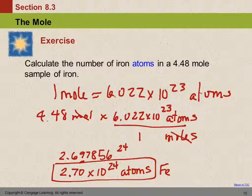How many gold atoms are in 4.48 moles of gold? The same — because a mole is a counting unit. If I have two and a half dozen donuts, it's 30 donuts. Two and a half dozen cars is 30 cars — it's the same number of things. A mole is a counting unit for atoms.